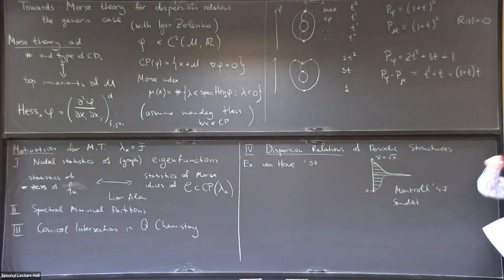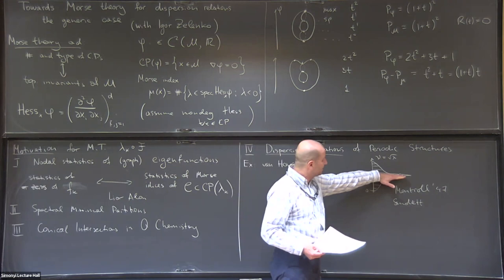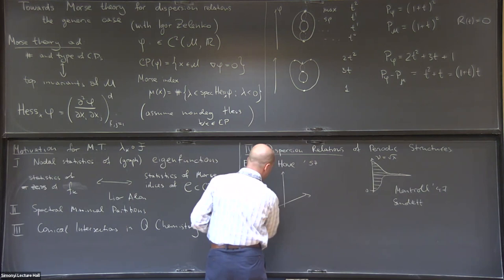This is the density of states. Van Hove pointed out that these peaks are due to saddle points in the dispersion relation. So the link between this surface and this distribution is that the distribution is the value distribution of this function. And if we have a saddle point where the gradient vanishes, the values sort of accumulate at this point — giving those peaks.